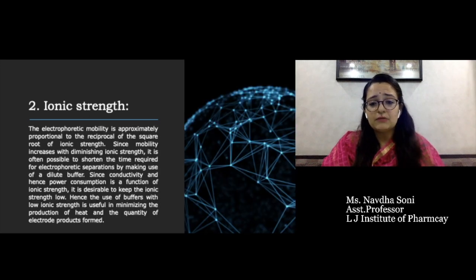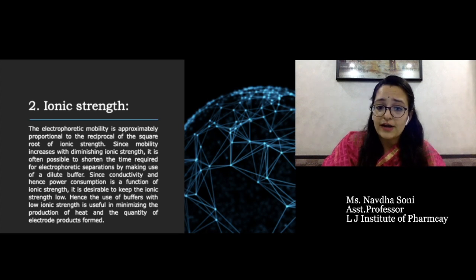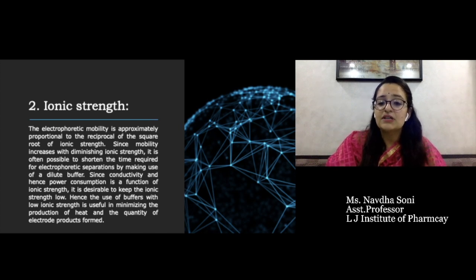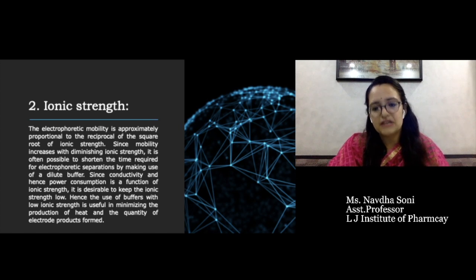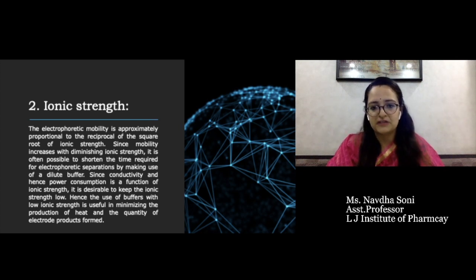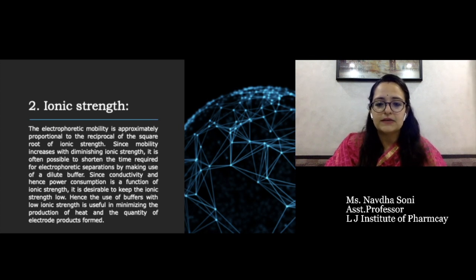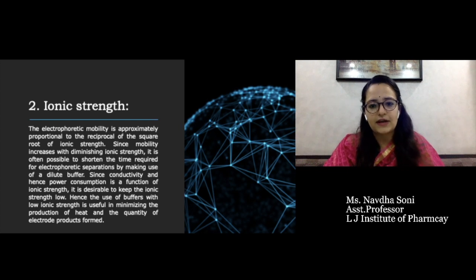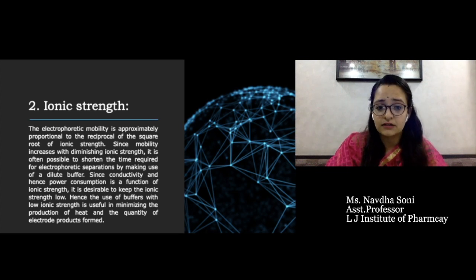The electrophoretic mobility is approximately proportional to the reciprocal of the square root of ionic strength — since mobility increases with diminishing ionic strength, it is often possible to shorten the time required for electrophoretic separation by using a dilute buffer. Since conductivity and power consumption are a function of ionic strength, it is desirable to keep the ionic strength low. Using a buffer with low ionic strength is useful in minimizing the production of heat and the quantity of electrode products formed.